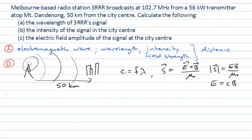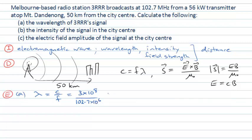Let's move on to our evaluation. For the first part — finding the wavelength — we rearrange c = fλ to make λ the subject: λ = c/f. The speed of light in free space is 3×10⁸ m/s, and the frequency is 102.7 MHz. Doing that calculation gives us 2.9 metres as our answer for the wavelength.